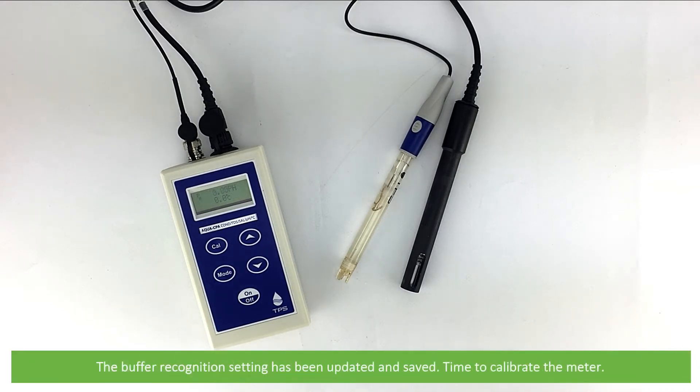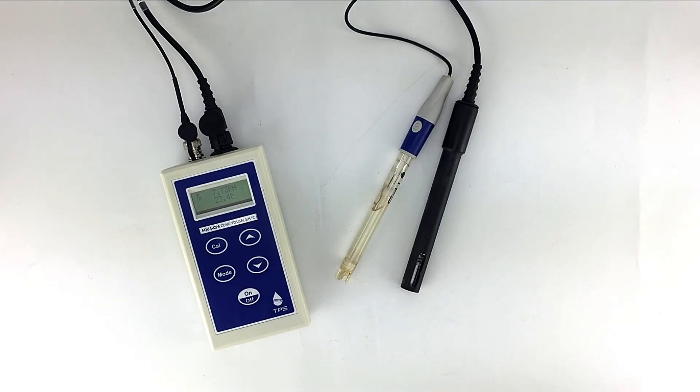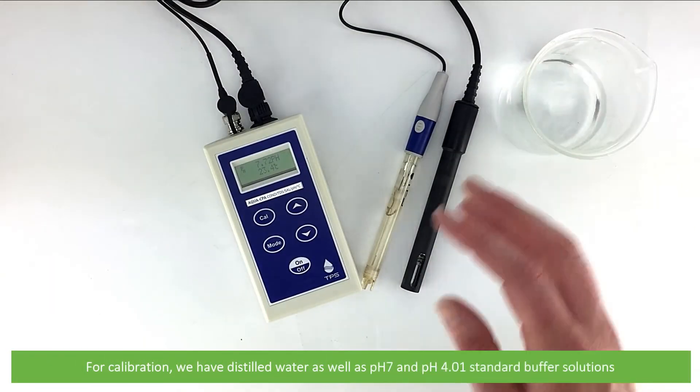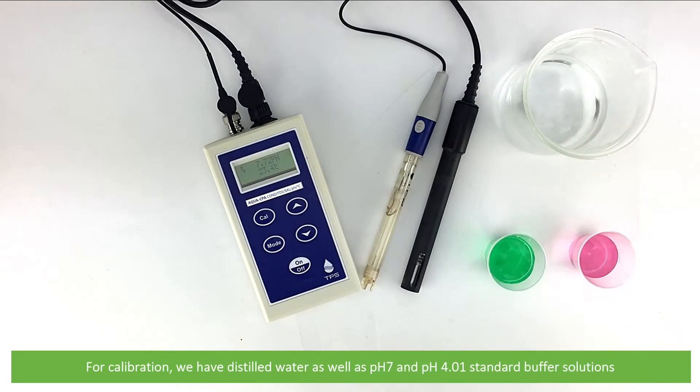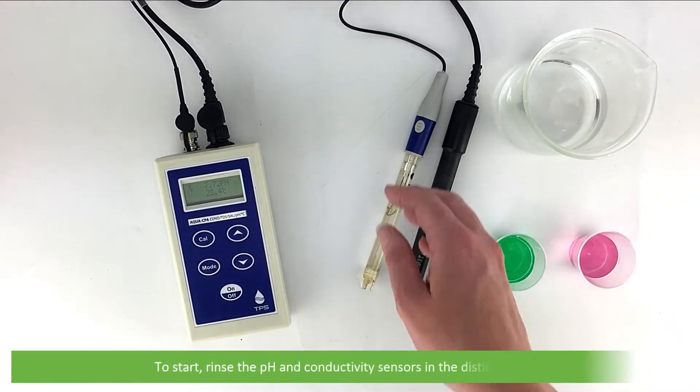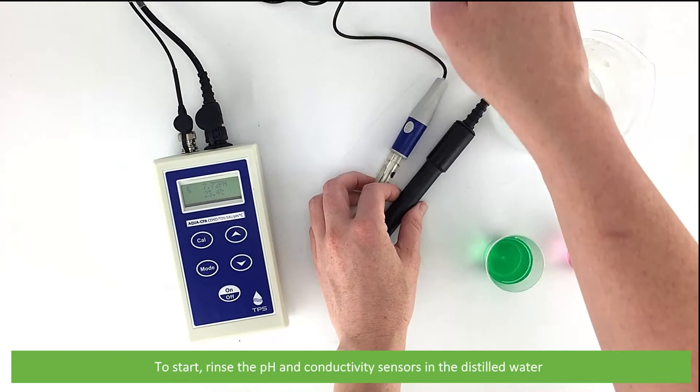The buffer recognition setting has been updated and saved. Time to calibrate the meter. For calibration, we have distilled water as well as pH 7 and pH 4.01 standard buffer solutions. To start, rinse the pH and conductivity sensors in distilled water.